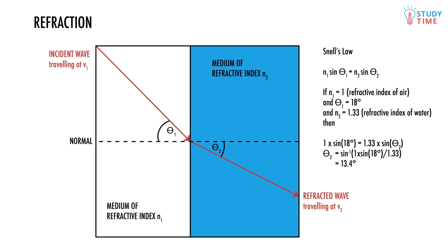We can use this equation to figure out how much the angle drops by. N1 times sine of theta 1 equals N2 times sine of theta 2. So 1 times the sine of 18 degrees equals 1.33 times sine of theta 2. Rearranging and solving, we get theta 2 equals 13.4 degrees.